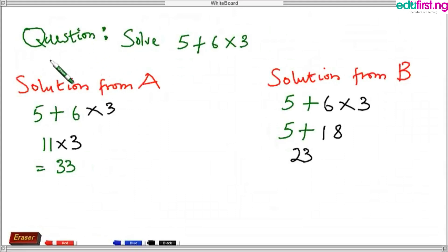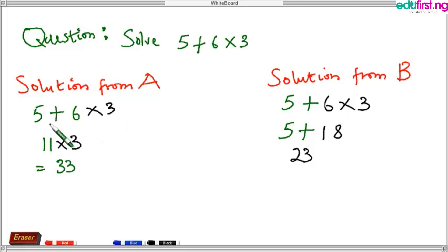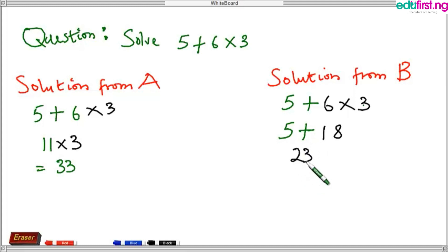Taking a good look at the whiteboard, you can see our question which says: solve 5 plus 6 times 3. We have a solution from A and a solution from B. A decided to add first before multiplying, which resulted in the answer 33. B decided to multiply first before adding, which resulted in the answer 23. It's quite strange — why are they arriving at different answers for the same question?